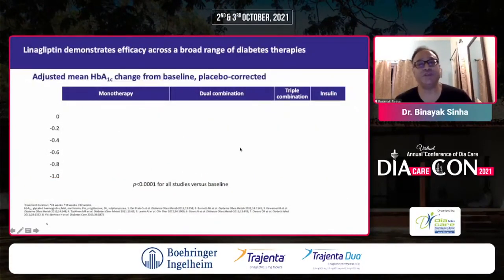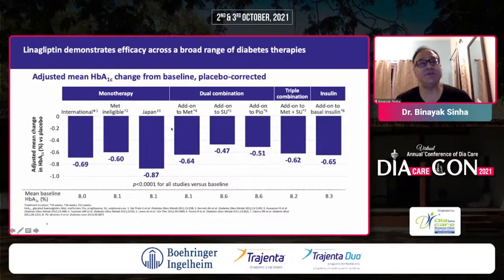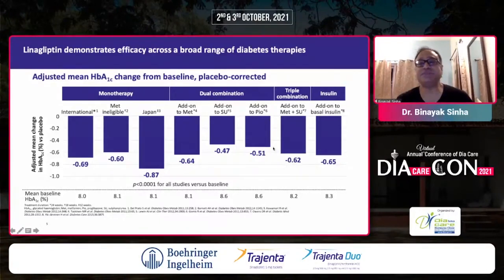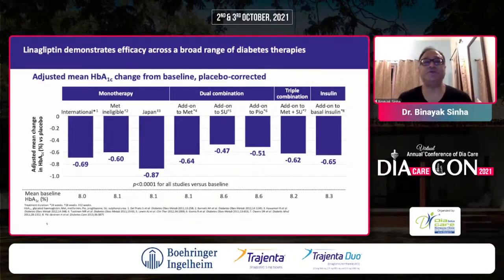What about the broad range of therapies? The broad spectrum of diabetes initially starts with monotherapy, then we graduate to two drugs, then three drugs, and then the patient starts requiring insulin. In monotherapy, about 0.6% to 0.9% reduction of HbA1c; dual combination 0.5% to 0.65%. All these studies are statistically highly significant with a baseline of about 8%, getting patients into target range of about 7% across early, late, and very late diabetes, whether as single, dual, triple drug, or in combination with insulin.